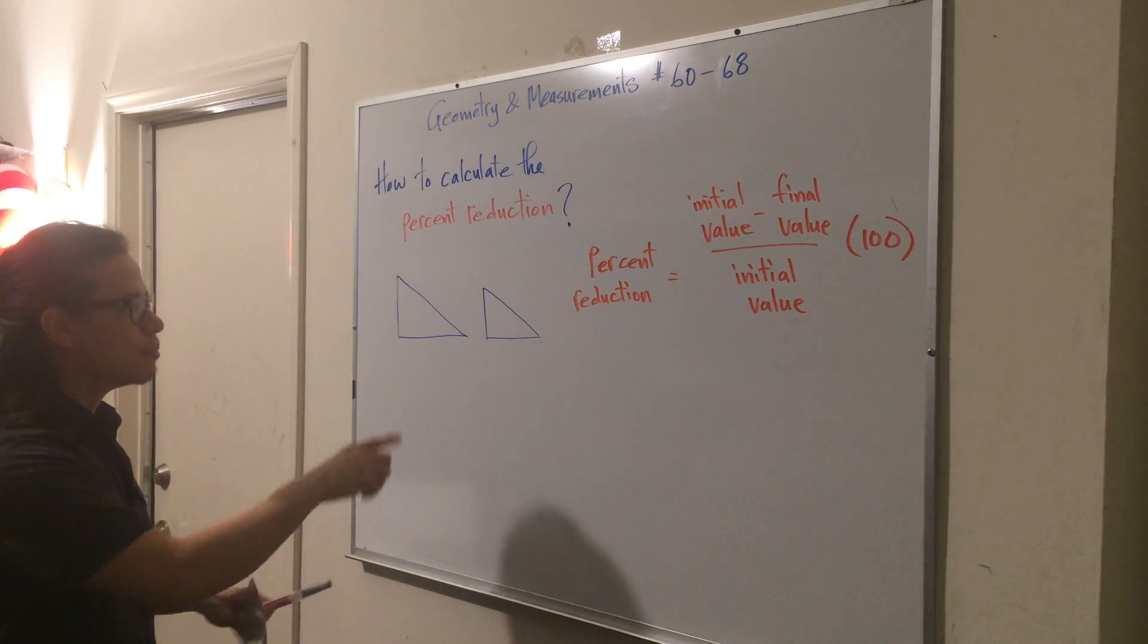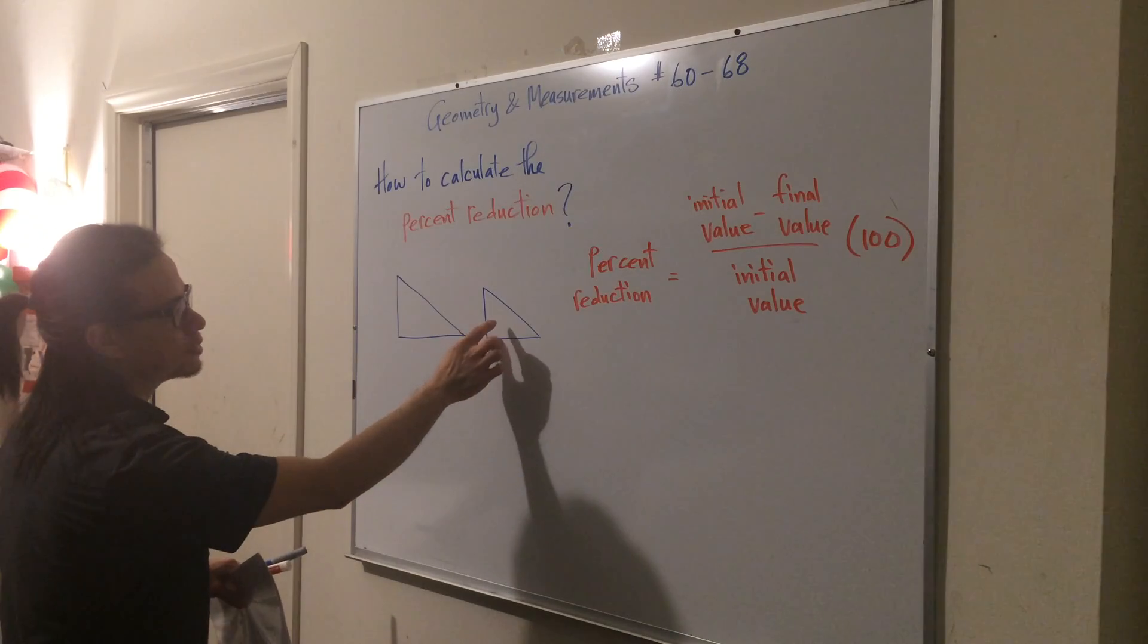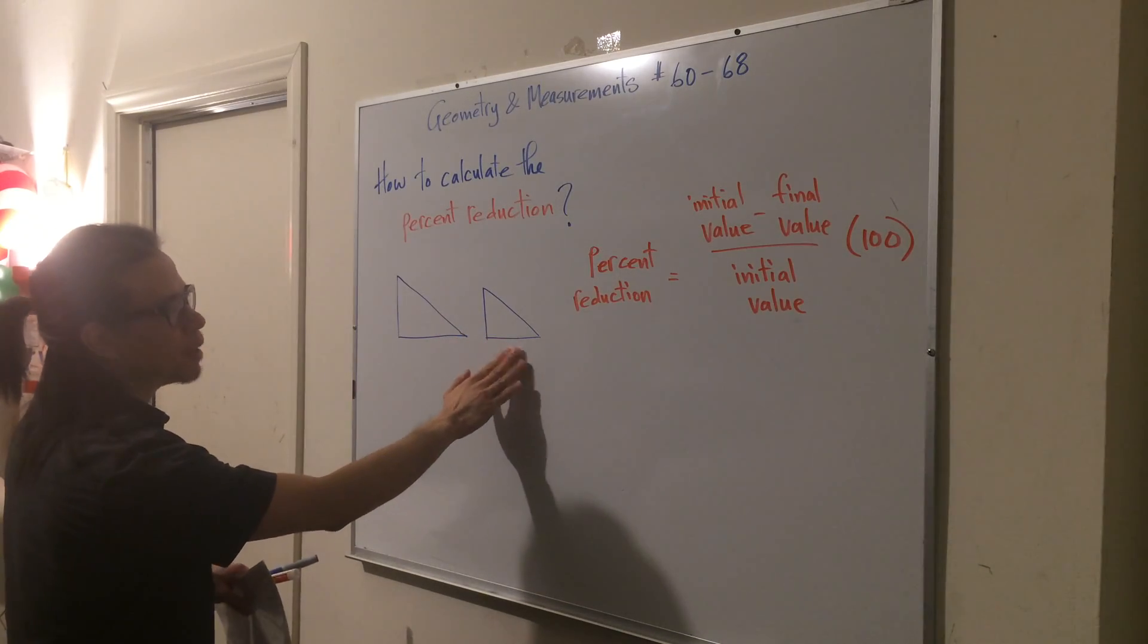So again, how much has this triangle been reduced by in order to get to the smaller triangle there?